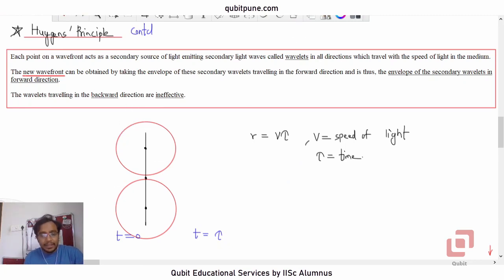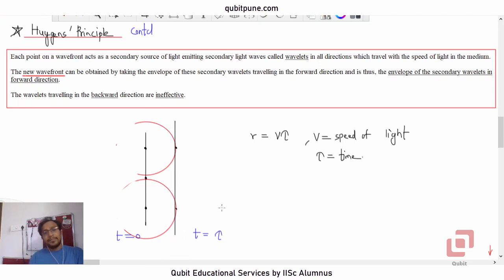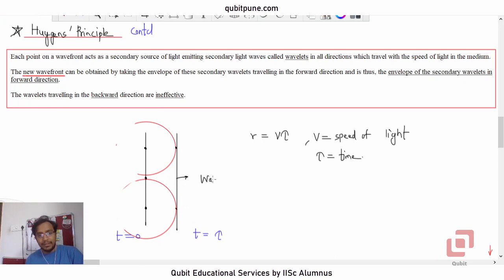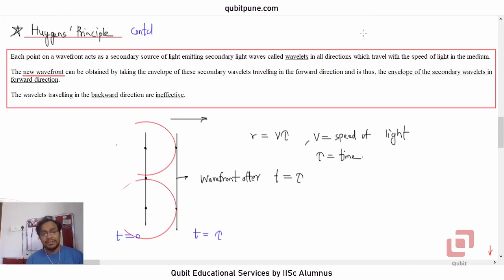Erasing the backward-traveling wavelets, and drawing an envelope of the forward wavelets, we get the new wavefront after time t = tau. This gives us the direction of propagation of light. This is called Huygens' construction.